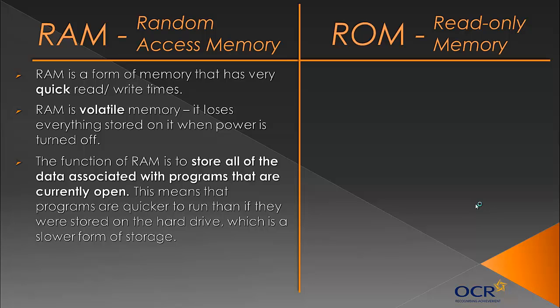However, because RAM is volatile, everything stored in it is lost when the power is turned off. You may have experienced this — when you forget to save something, like an essay or a PowerPoint, and there's a power cut or someone turns your computer off, all your work suddenly gets lost. People often confuse this because Microsoft Word may show a recovery sidebar, but that isn't from the RAM — it's Word periodically saving stuff on your behalf. RAM is not permanent; it's temporary storage.